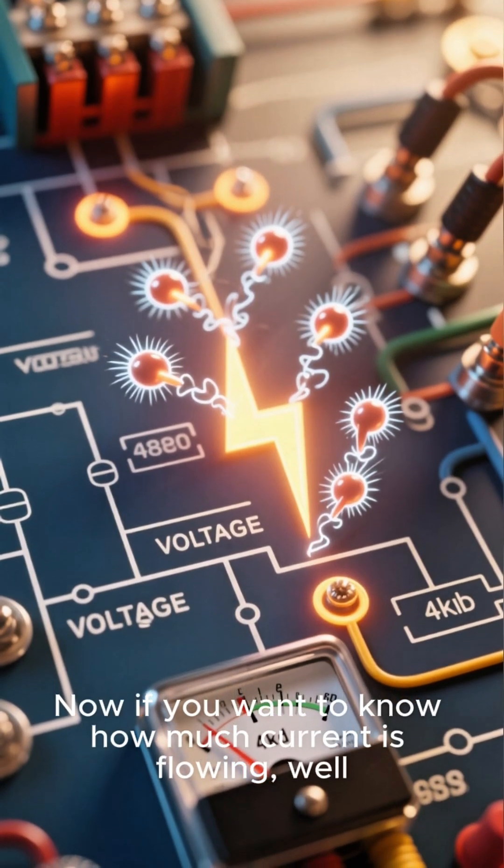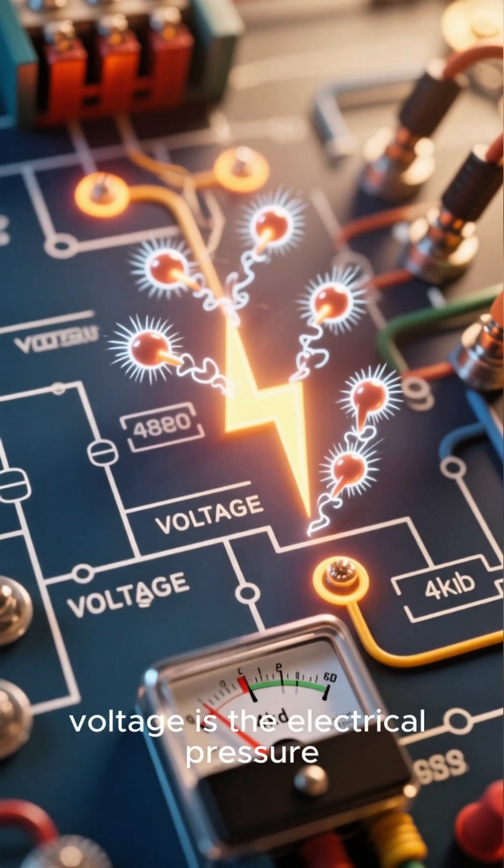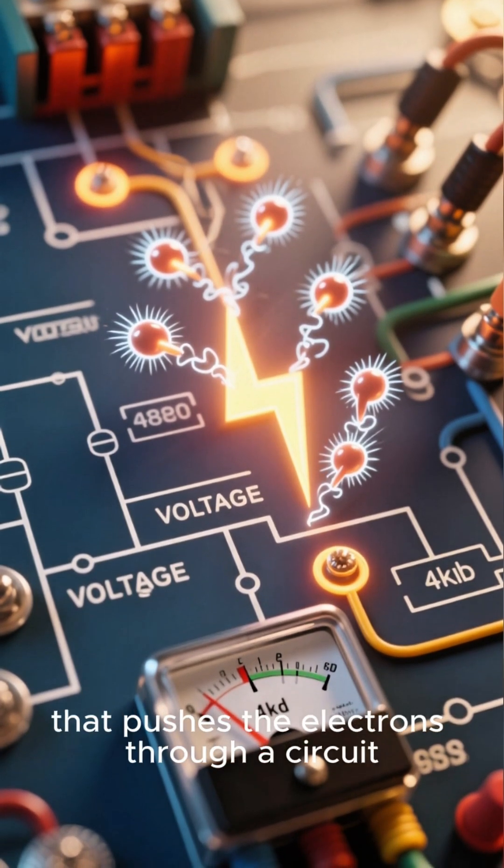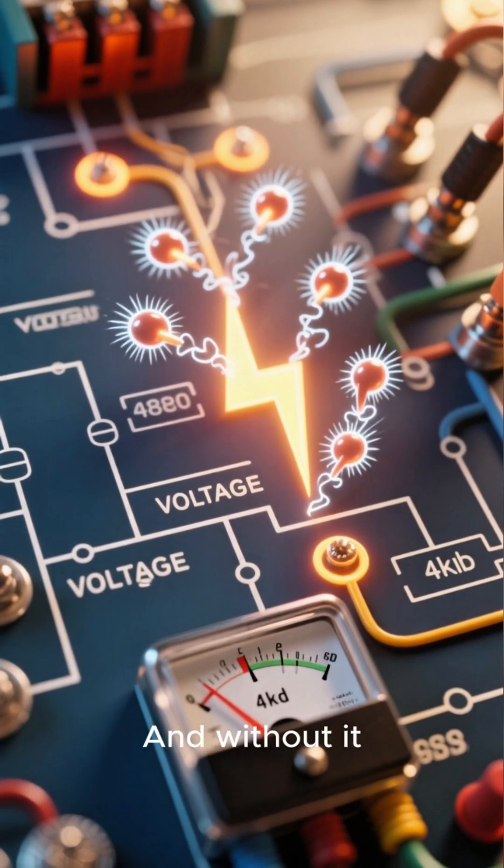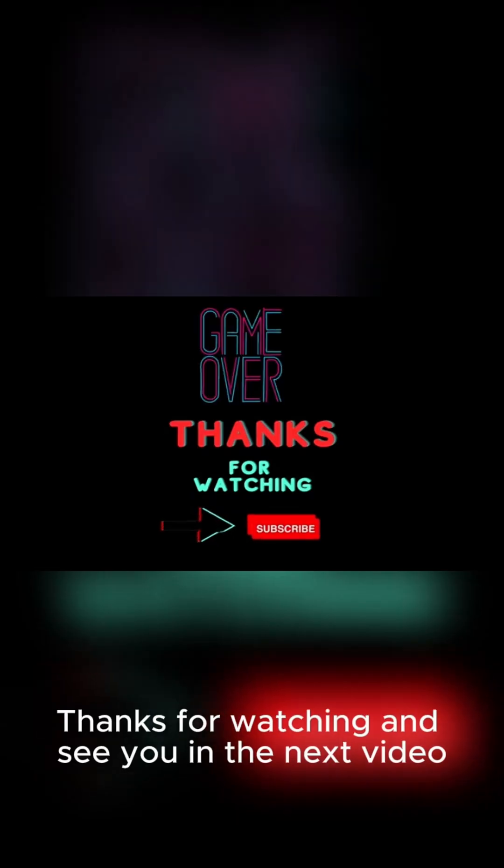Now if you want to know how much current is flowing, that's a whole other story. But to summarize, voltage is the electrical pressure that pushes electrons through a circuit, and without it our electronic devices would not work. Thanks for watching and see you in the next video.